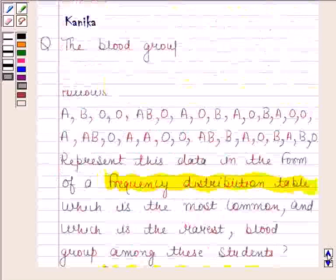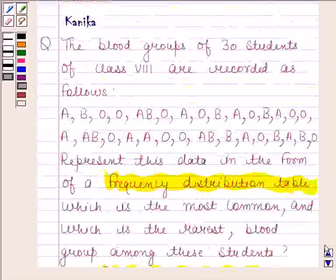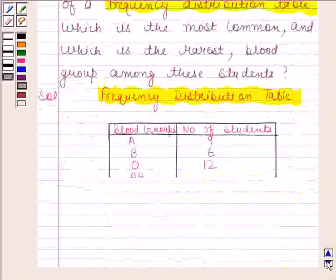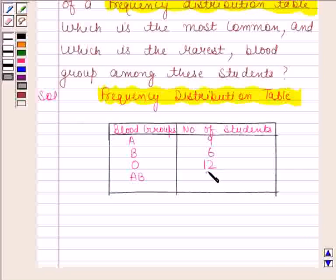Now find how many students have AB blood group. So 1, 2, 3. Three students have AB blood group.